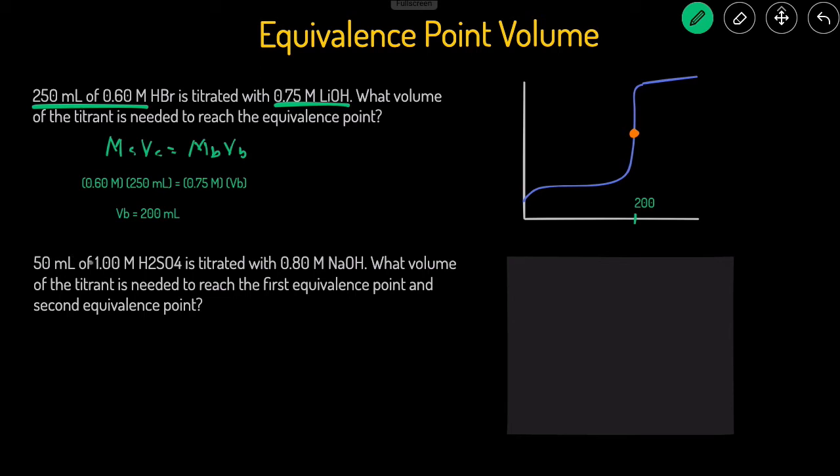We have 50 milliliters of 1 molar H2SO4 titrated with 0.8 molar NaOH. And this question is asking us what volume is needed to reach the first equivalence point and the second equivalence point. Because we have a diprotic acid, we have an acid that has two H's in it. And we're titrating it with just a base that has one OH. That means that we're going to get two equivalence points.